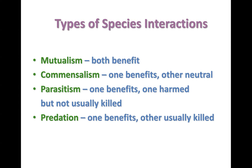Parasitism is a relationship in which one organism benefits and the other is harmed but not usually killed. This parasitic organism benefits from the host, and it is advantageous for it to not kill that host — but the parasitic organism can render harm to the host that is harboring it. Predation is a relationship where one organism benefits and the other is usually killed. It's important that you be able to distinguish between these types of species interactions among organisms.